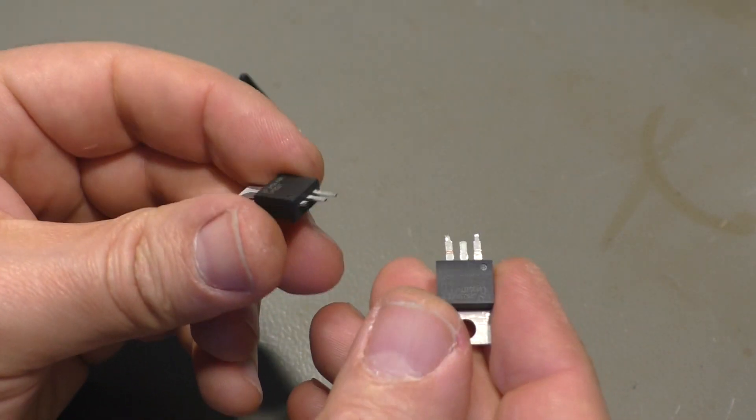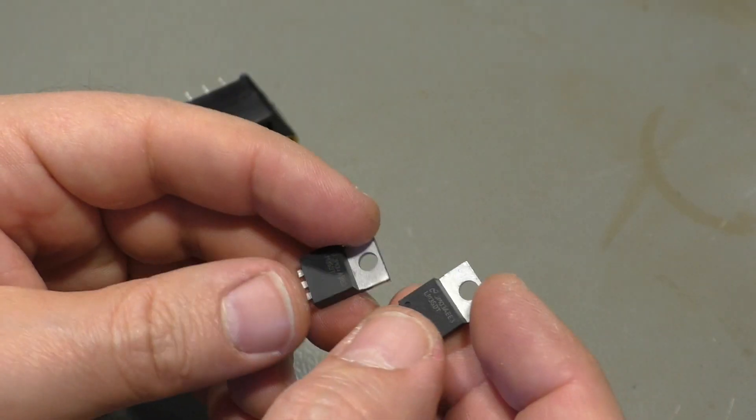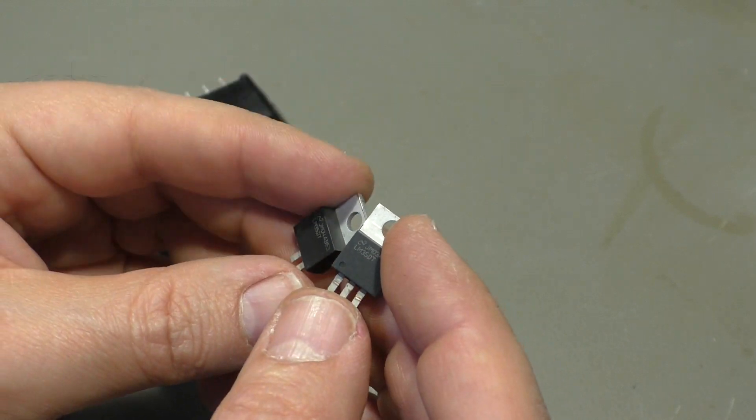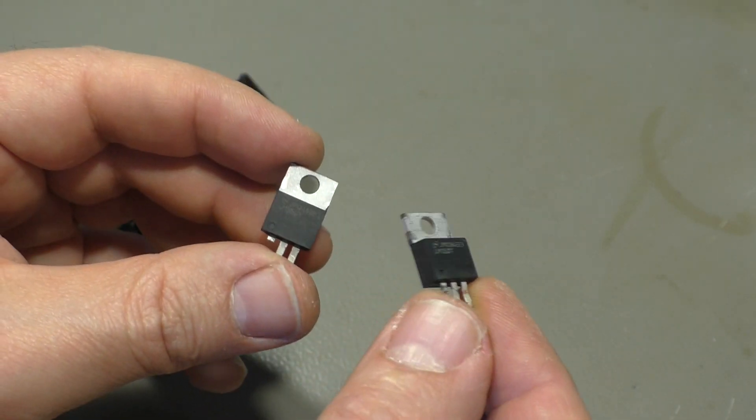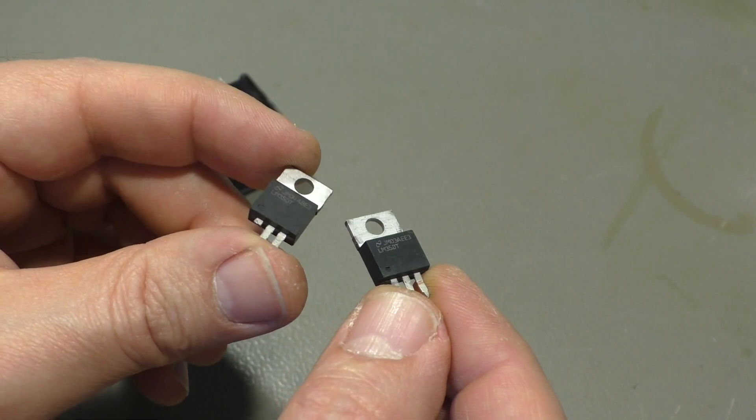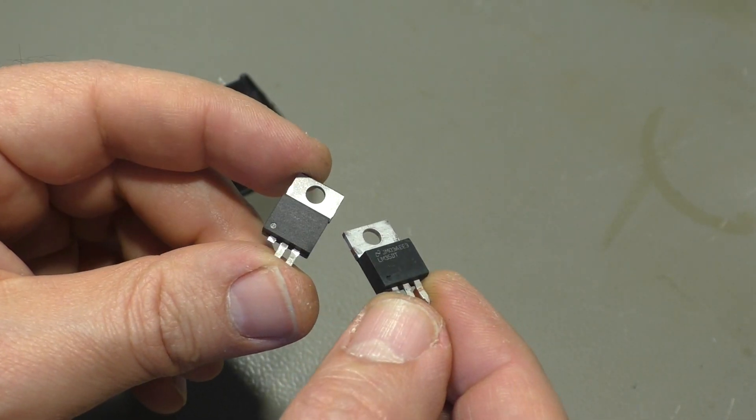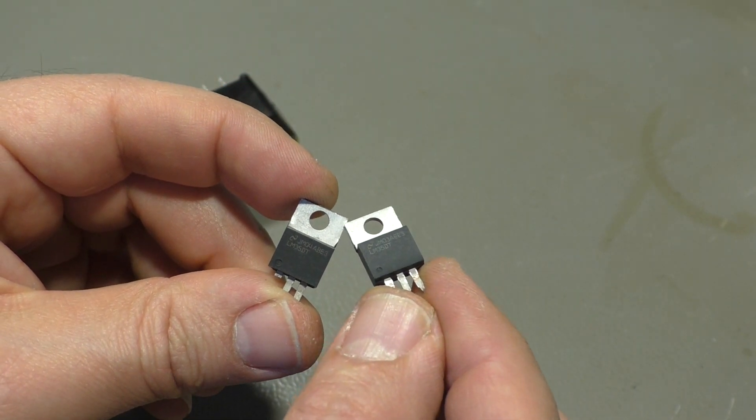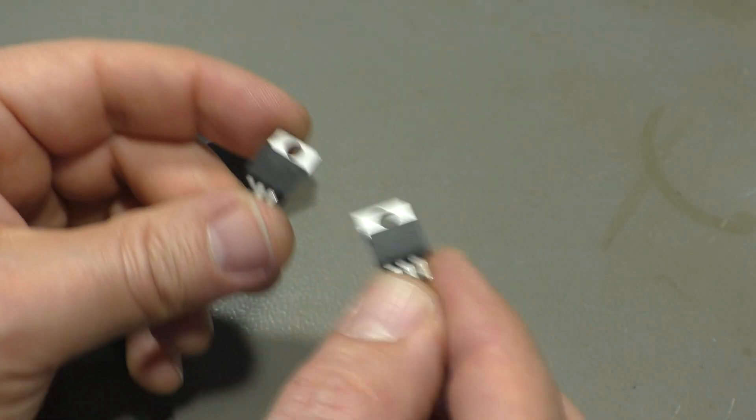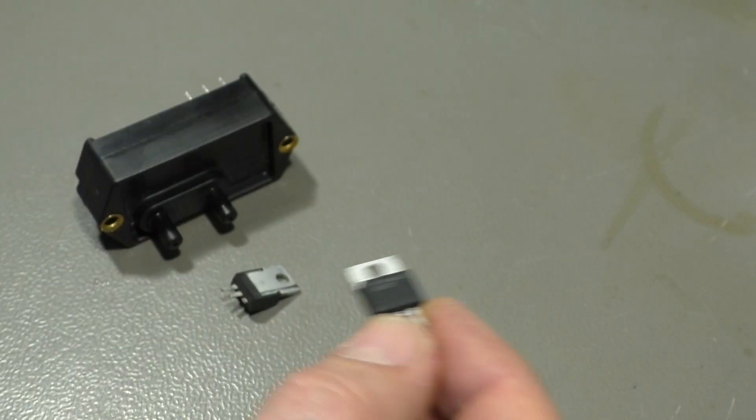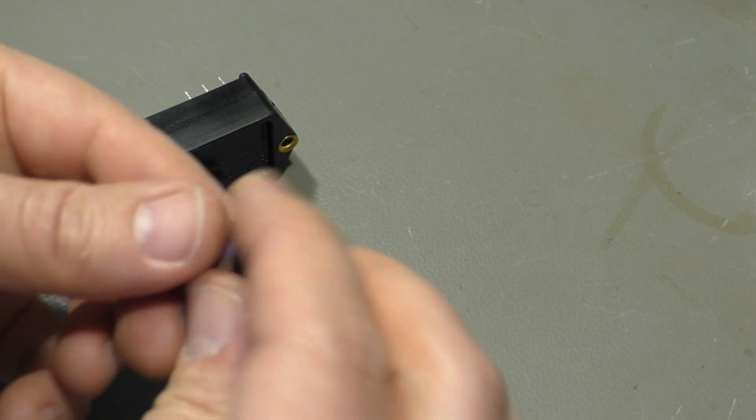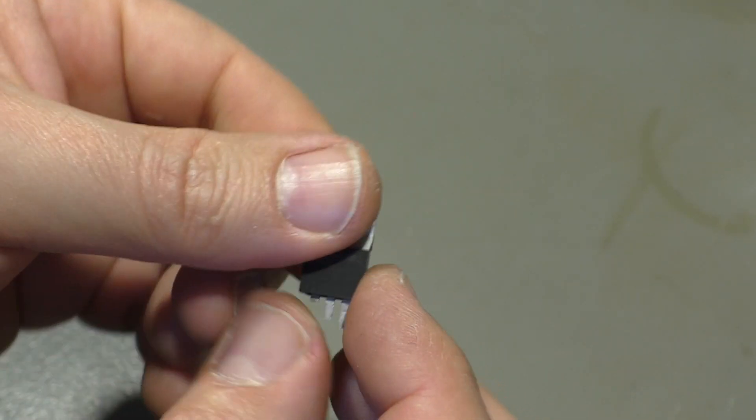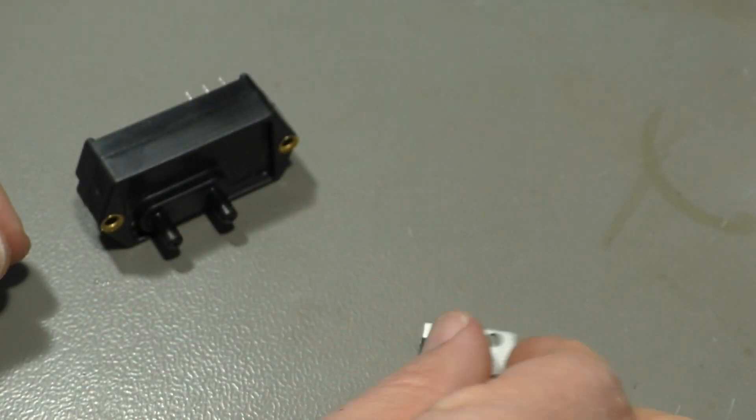These two are from IBM blade center blowers and they have literally blown off the board because the bearings of the fan were worn out and they shook so strong that they fell off. You can see the legs here are broken off, but that's good enough for me to play with it.